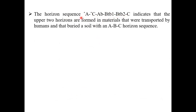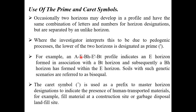So a horizon sequence like '^A, ^C, Bt, Bt1, Bt2, C' - the caret symbol indicates that those two upper horizons are formed in material transported by humans and buried over soil with an ABC horizon sequence. The caret symbol means all those layers were formed by human interference - maybe bricks, pottery, plastic, or other waste materials. The prime symbol is used when the same combination profile is found but separated by unlike horizons - please remember the difference between prime and caret symbols.